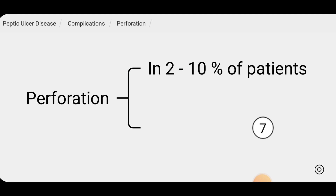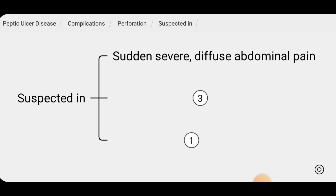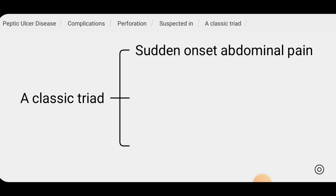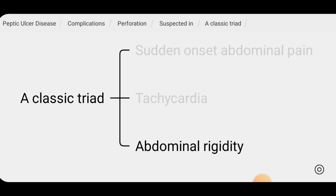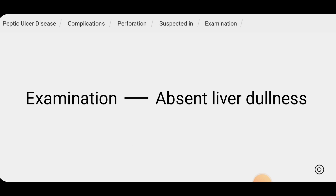Perforation complicates 2–10% of patients with peptic ulcer disease. Ulcer perforation should be suspected in patients who suddenly develop severe diffuse abdominal pain. A classic triad of sudden onset abdominal pain, tachycardia, and abdominal rigidity is the hallmark of peptic ulcer perforation. On examination, liver dullness may be absent.